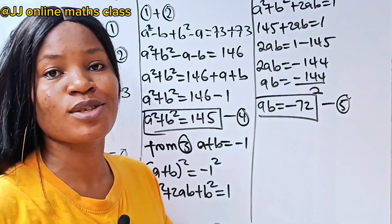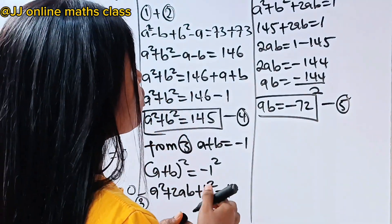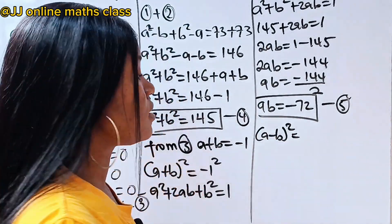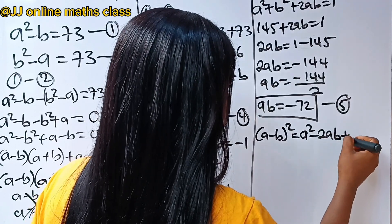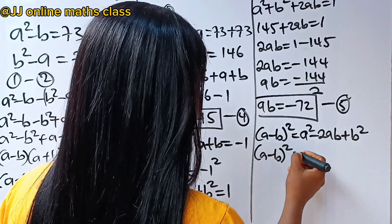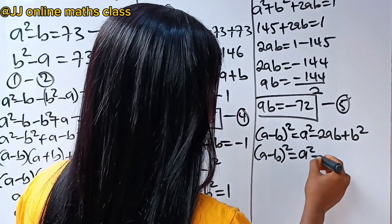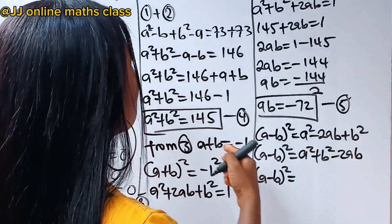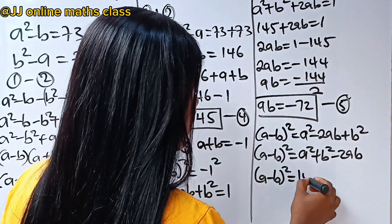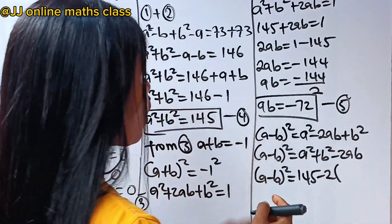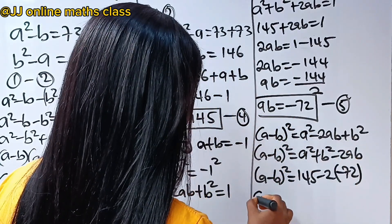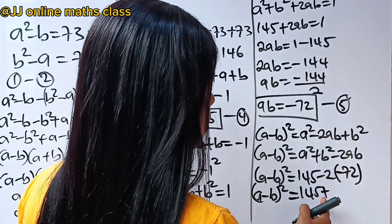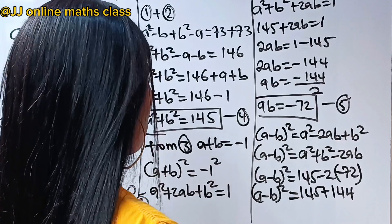We are going to substitute to get our a and b. Let's find a minus b squared. By algebraic identity, a minus b squared equals a squared minus 2ab plus b squared, which equals a squared plus b squared minus 2ab. That is 145 minus 2 times ab. Since ab is minus 72, we have 145 minus 2 times minus 72, and minus times minus is plus, giving 145 plus 144.